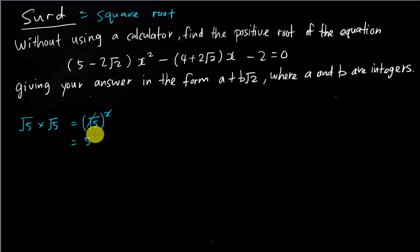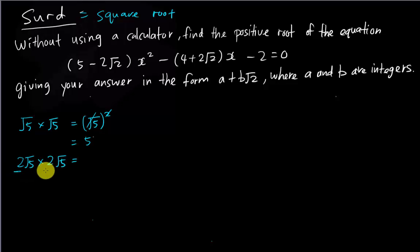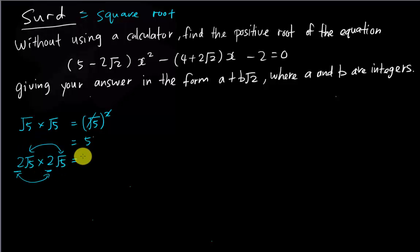However, if I have 2√5 multiplied by 2√5, I have to multiply 2 with 2 first, then √5 with √5. So 2 times 2 gives me 4, and √5 times √5 gives me 5, so in the end I get 20. This is something quite important about surds.